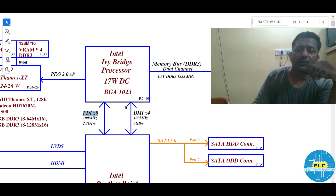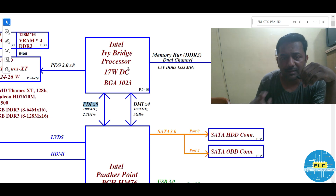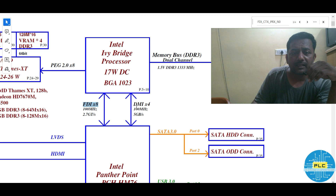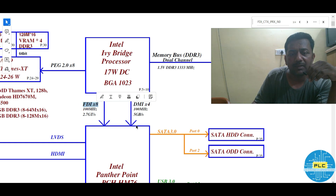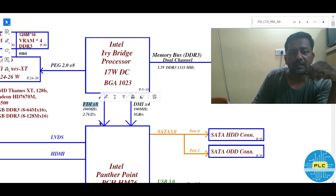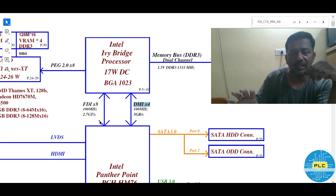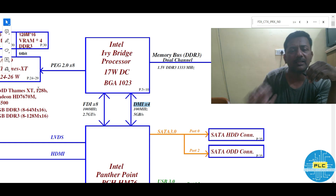But now, what are the communications between this PCH and processor — that we can see here. The DMI and FDI — what are these buses, what is the use of these buses. I will come to the FDI path first, then DMI. I will explain both; you decide which one is first and which one is last.